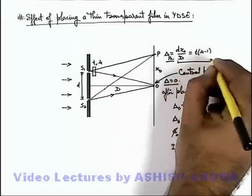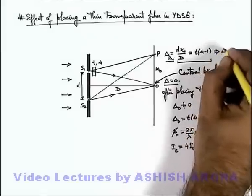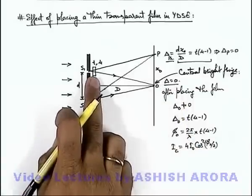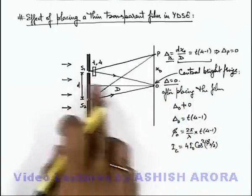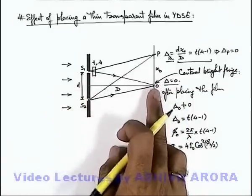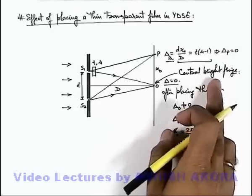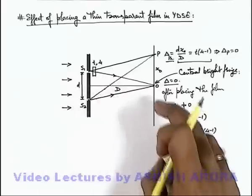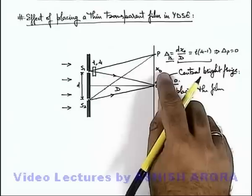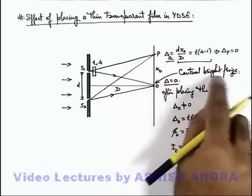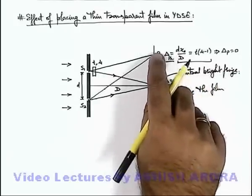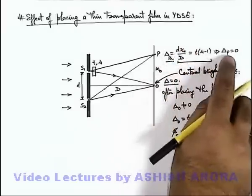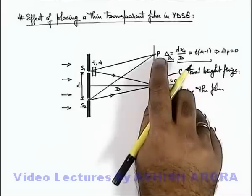This implies the path difference at point P is zero. So when the film was not present, the centre of the screen had the central bright fringe or central maxima. As soon as we place the film, the whole fringe pattern will shift upward by a distance x₀, so that the central maxima reaches point P, where dx₀/D equals t(μ − 1), and this is the point where the path difference is now zero.